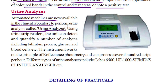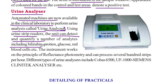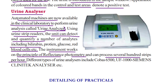Automated urine strip readers use urine strip technology. The unit can detect and quantify a number of analytes, including bilirubin, protein, glucose, and red blood cells. The instrument works on the principle of reflectance photometry and can process several hundred strips per hour.